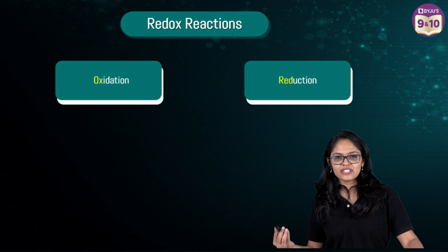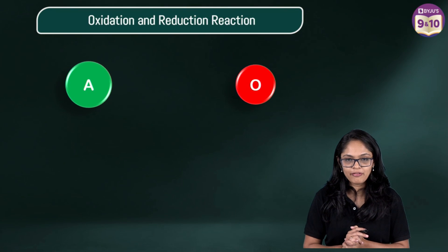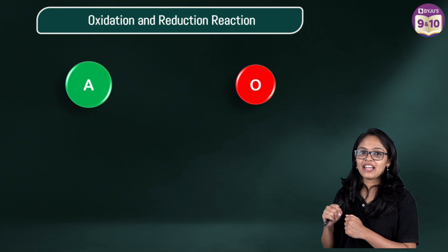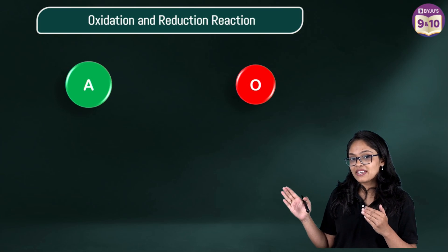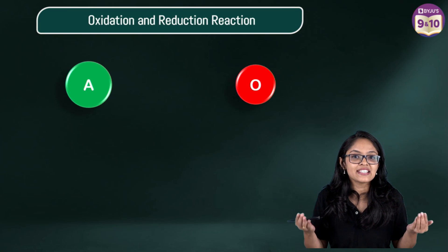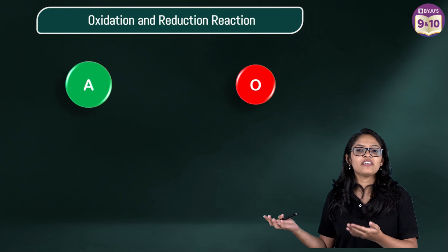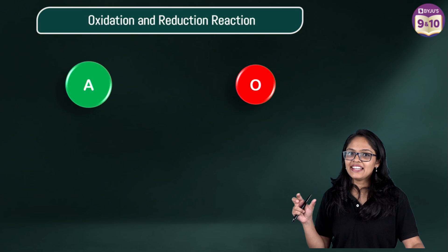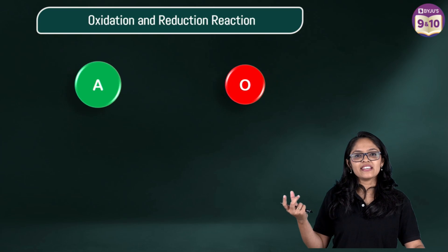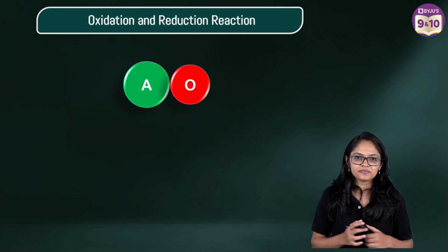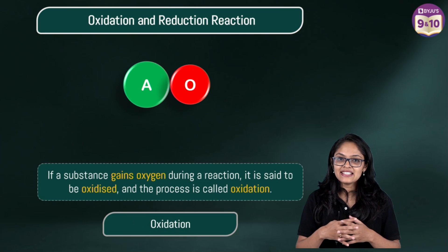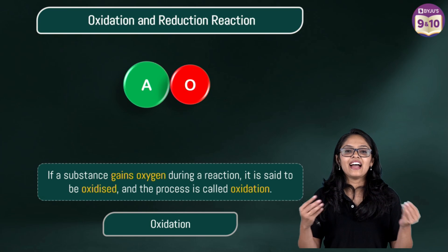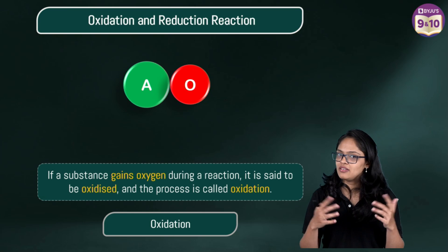What is an oxidation and reduction reaction? Well, if a substance — let's call it substance A — gains an oxygen atom, then that substance A is getting oxidized and the process is called oxidation. If a substance gains oxygen during a reaction, it is said to be oxidized and the process is called oxidation.